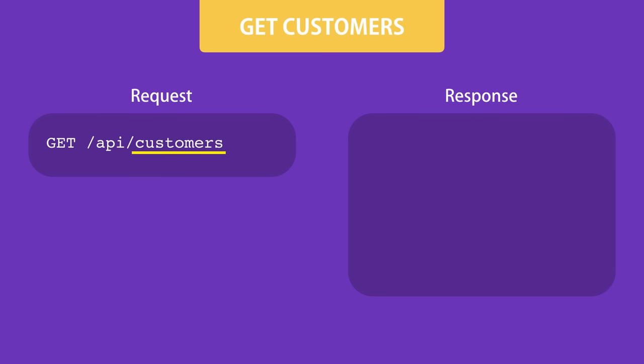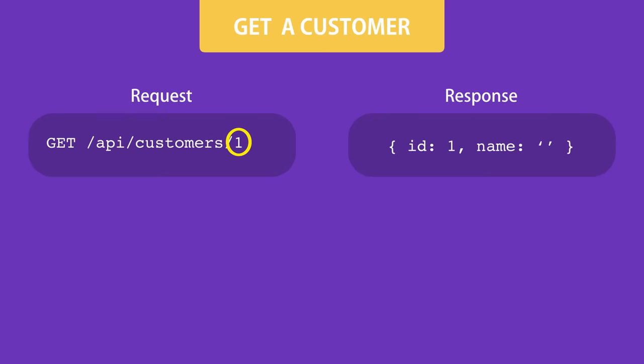To get the list of all customers, send an HTTP GET request to this address. Note the plural name 'customers' — it indicates a list. When we send an HTTP GET request to this endpoint, the service returns an array of customer objects. If we want a single customer, we include the ID of that customer in the address, and the server responds with a single customer object.